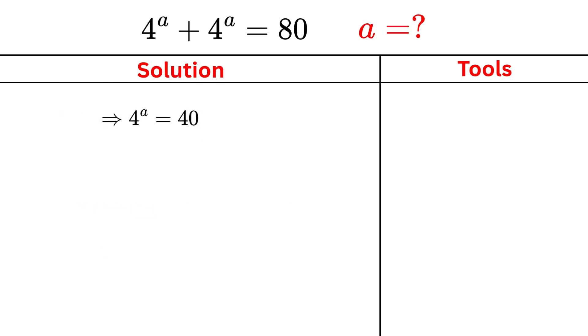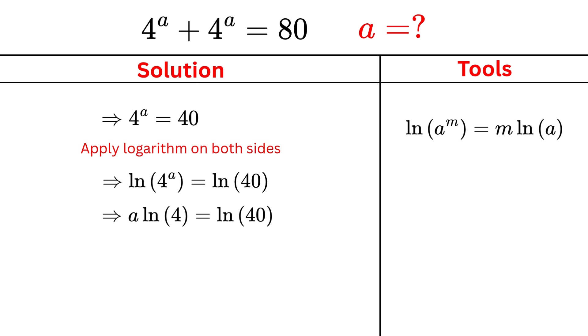To find the value of a, we apply logarithm on both sides. Using logarithmic rules, the power comes down in front, so it becomes a × log(4) = log(40). Now to isolate a, we divide both sides by log(4). So a = log(40) / log(4).